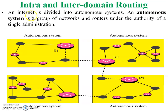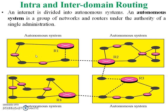An internet is divided into autonomous systems. An autonomous system is a group of networks and routers under the authority of a single administration. You can see in the diagram: this is the R1 autonomous system, where routers R2, R3, and R4 are available. This yellow box represents one autonomous system — a group of networks or routers connected with each other.